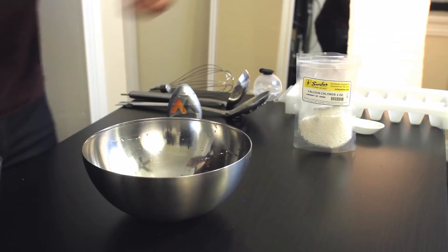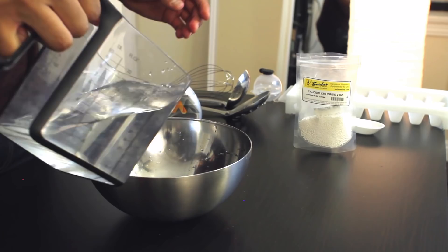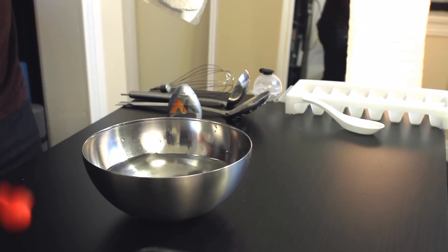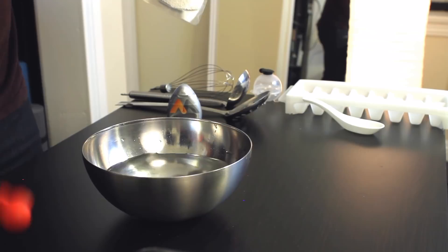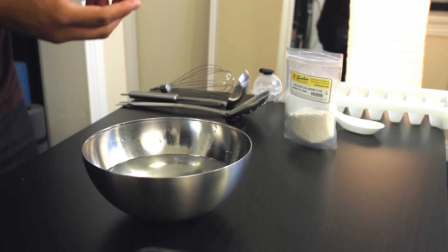Next, you want to take your small bowl and fill it up with two cups of water. Add half a teaspoon of your calcium chloride. And if you want to add flavor to your water bubble, you can add some peach tea Mio.